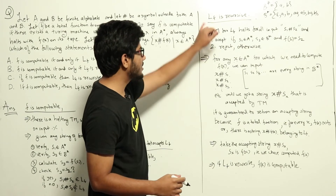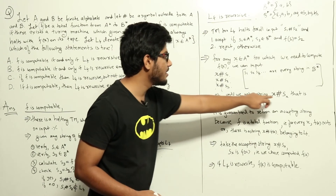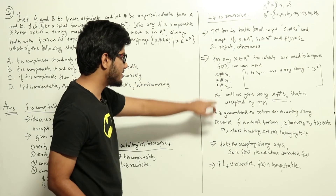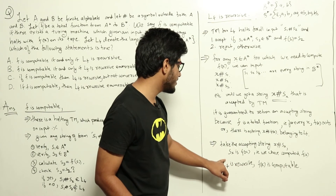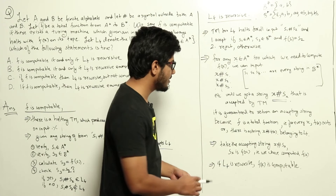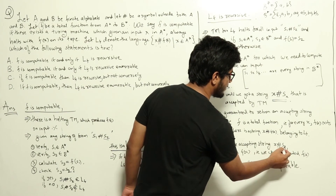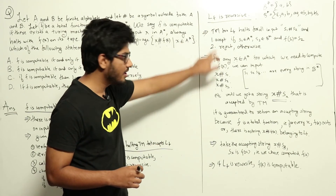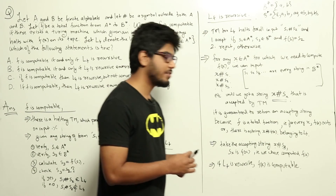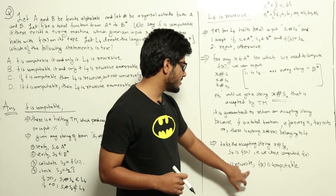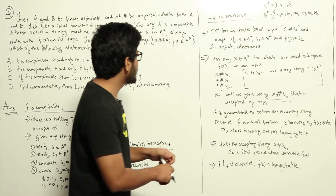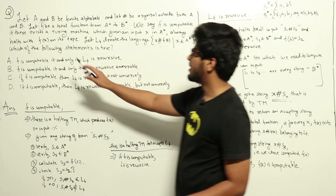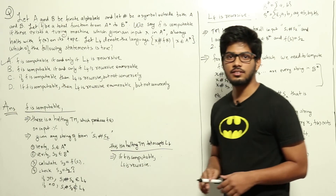After running this procedure, the Turing machine halts and gives us a string x hash sx that it accepts. The accepting string tells us that sx is nothing but f(x), so we have just computed f(x). This gives an algorithm — if Lf is recursive, we can calculate f(x) for any given x, meaning f is computable. So we have proved both directions: if f is computable then Lf is recursive, and if Lf is recursive then f is computable. Therefore, option (a) is the correct answer: f is computable if and only if Lf is recursive.